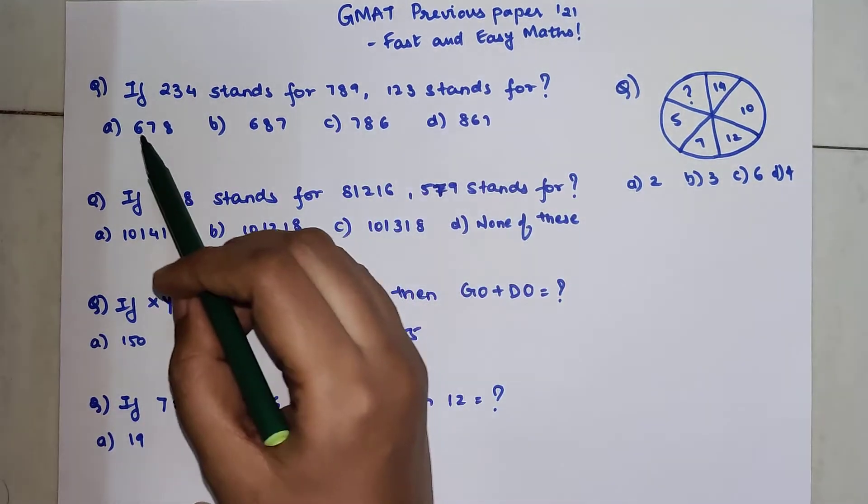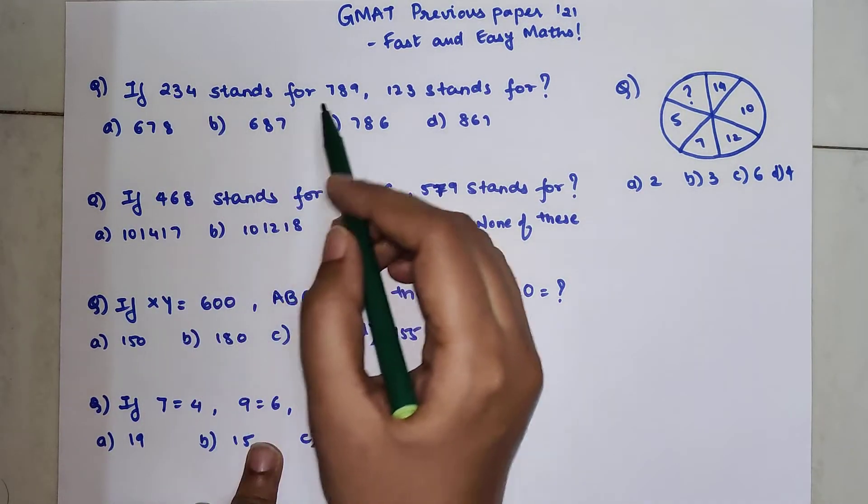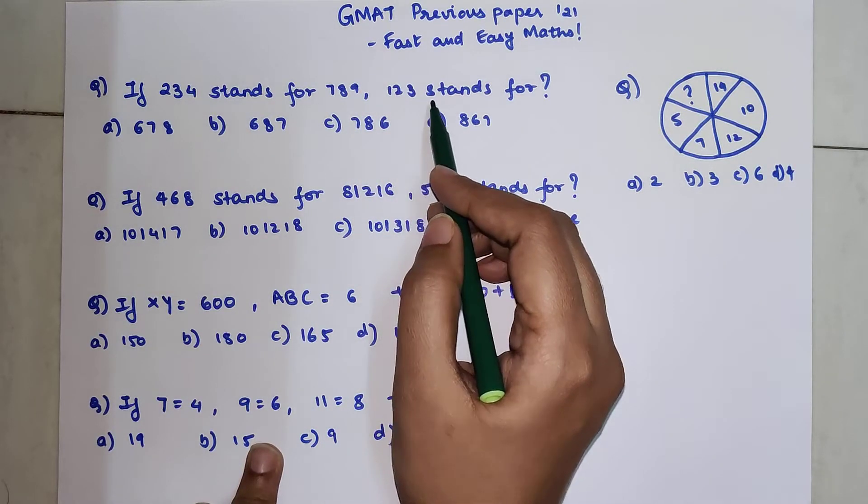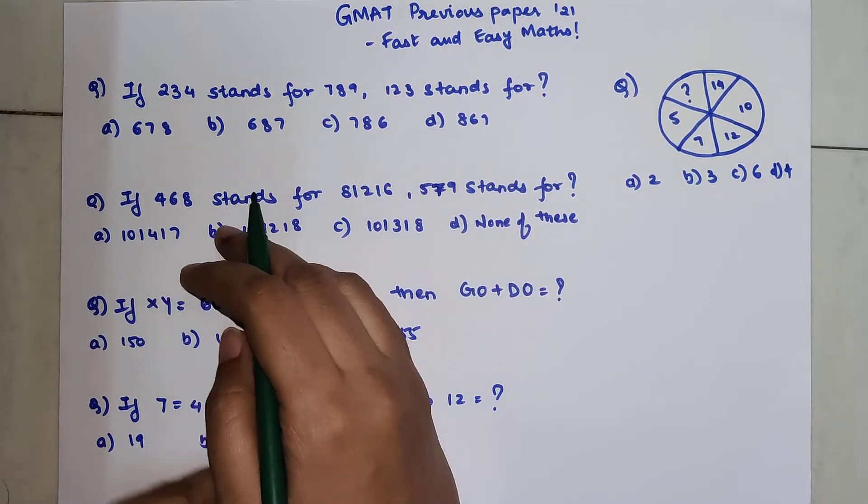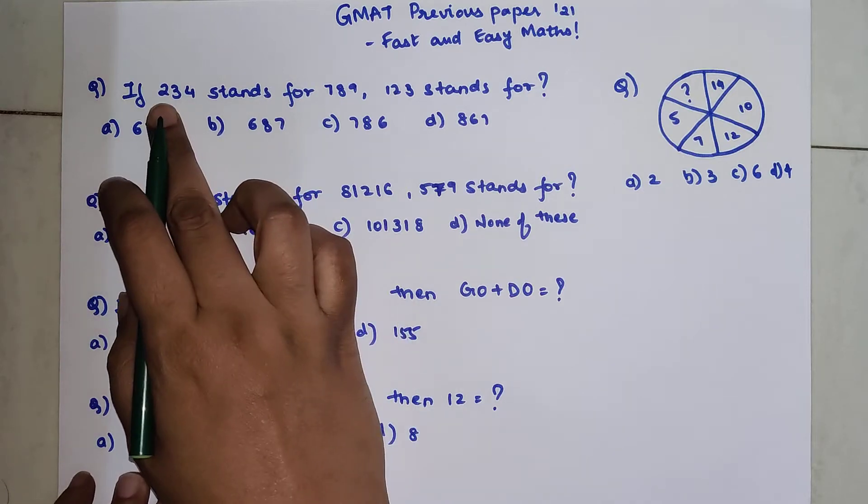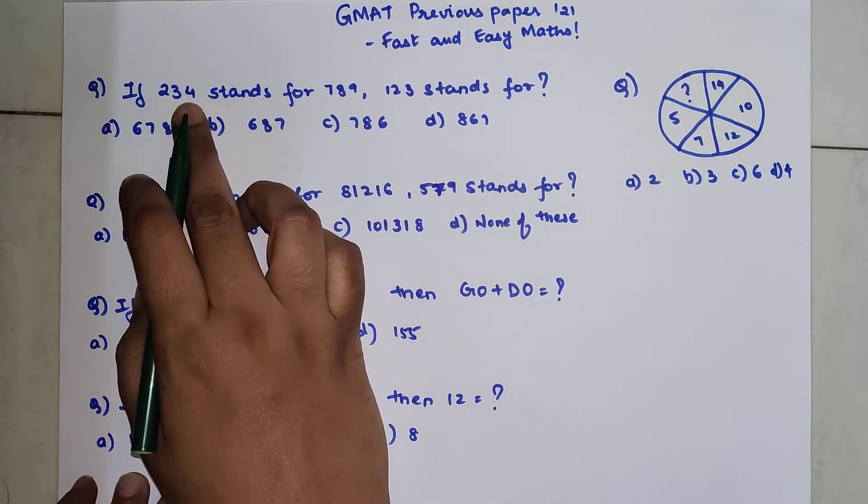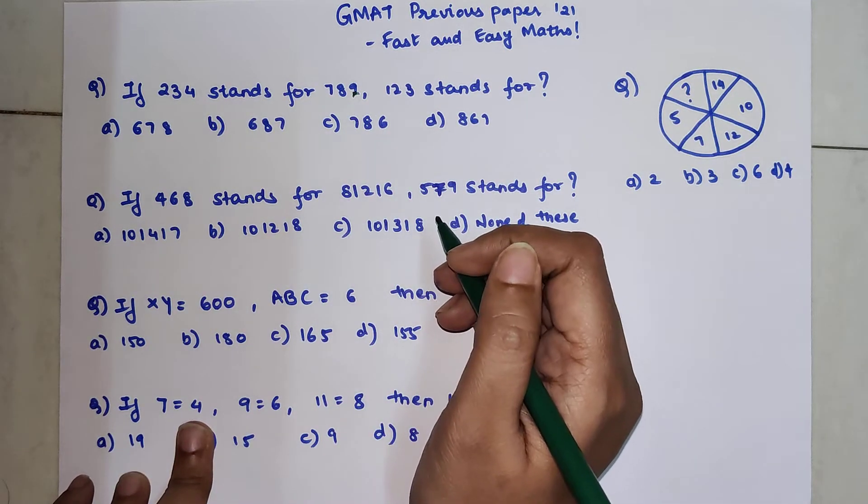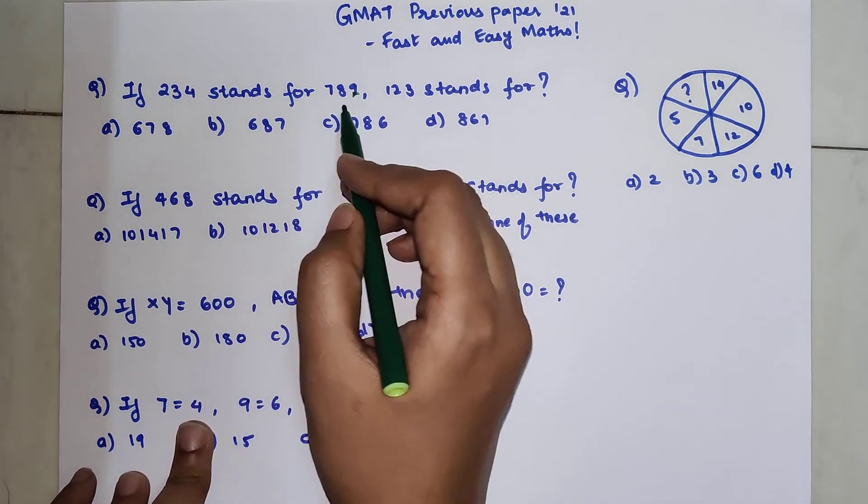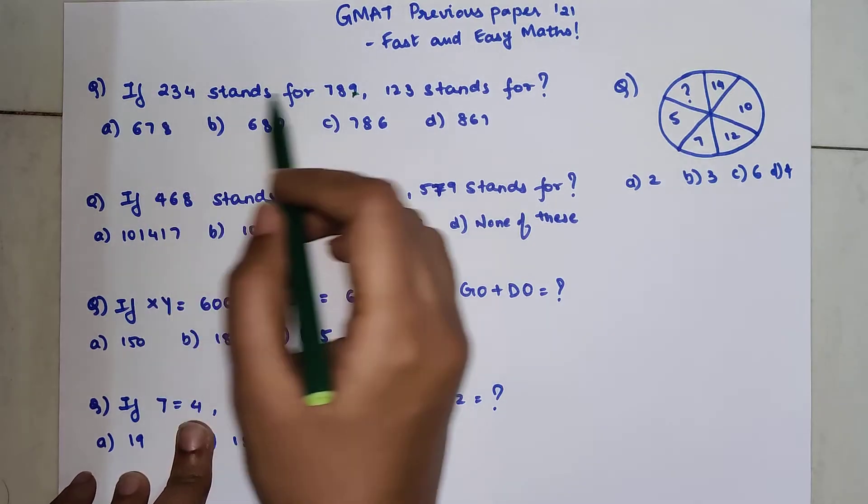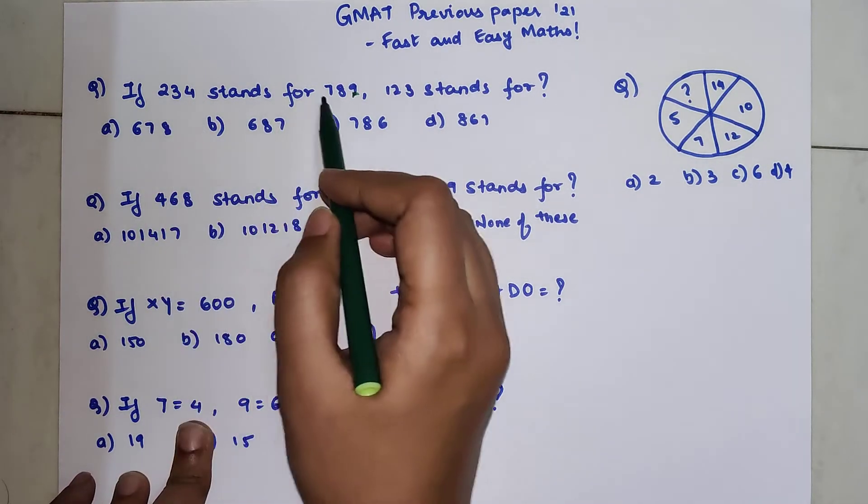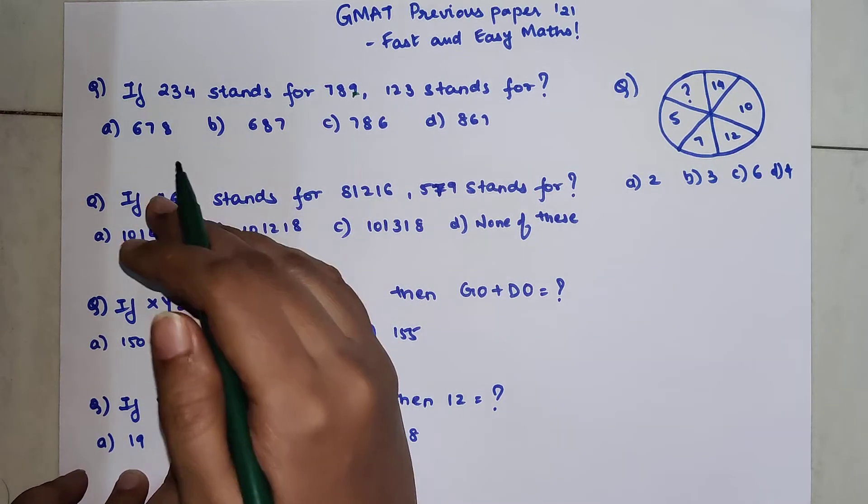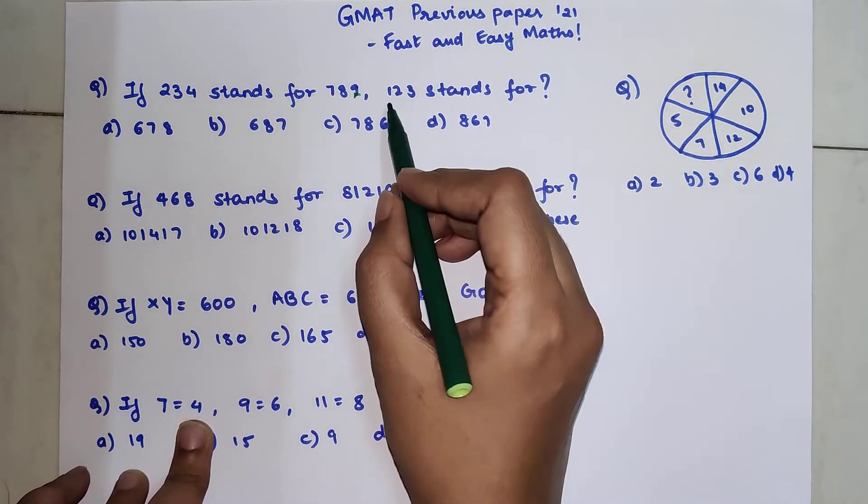So now the first question is if 234 stands for 789 then 123 will stand for what? Now see, if you look over here when you add 2 plus 3 plus 4 you get what? 9 and the last digit of your answer is what? 9. Apart from this you will not be able to find proper correlation between 234 and 7 and 8. So as of now we are going to use this particular logic and let's see if it works out.